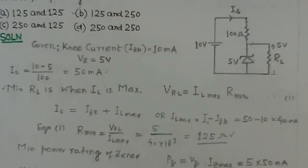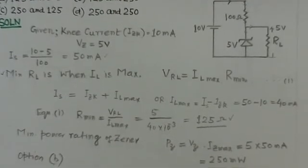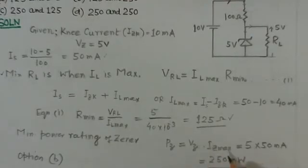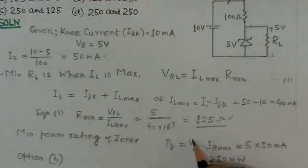We have to find the minimum power rating of the Zener diode. The minimum power rating of the Zener diode, you can find what is the current flowing through the Zener and what is voltage. VZ is already known to be 5 volts, but what is the maximum current that can flow through the Zener?